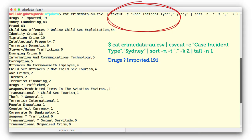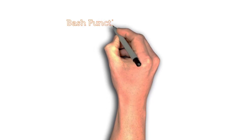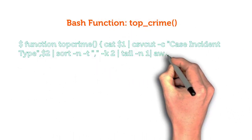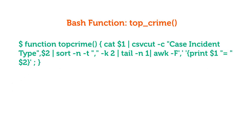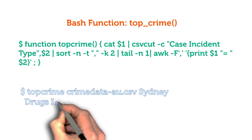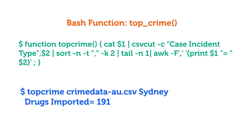Now let's build our desired function. For knowing more about bash functions, please refer to the tutorial section. Example run: note that the first argument, crimedata-au.csv, and the second argument, cityName colon Sydney, were automatically placed into the $1 and $2 variables inside the function. However, inside awk's call, $1 and $2 represented the first (crime type) and second (number of crimes) columns of the piped output.